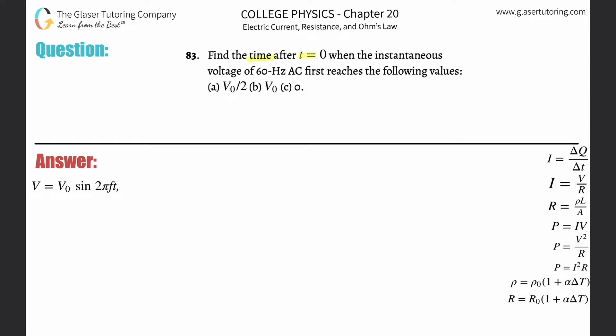Number 83, find the time after T equals zero when the instantaneous voltage of 60 hertz alternating current reaches the following values: the initial voltage divided by 2.